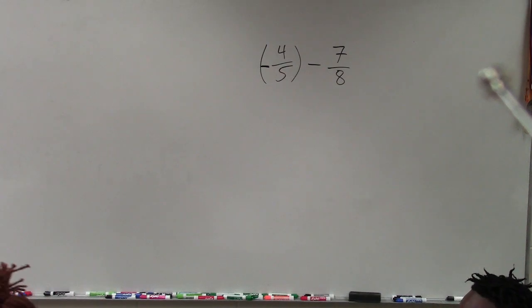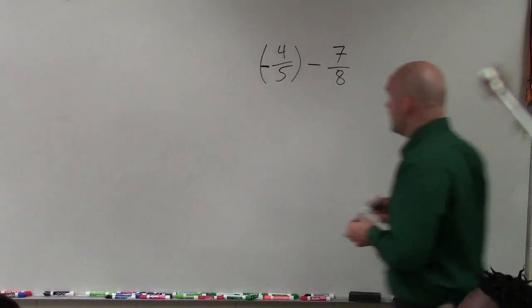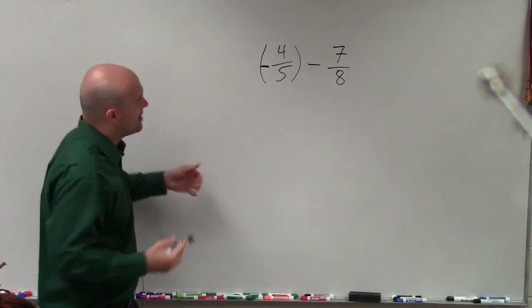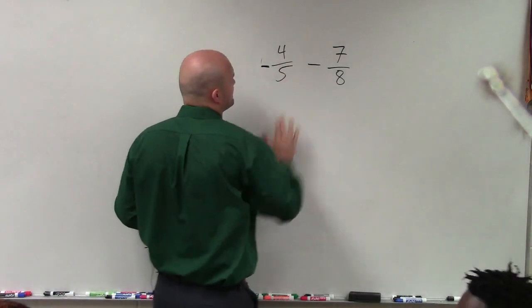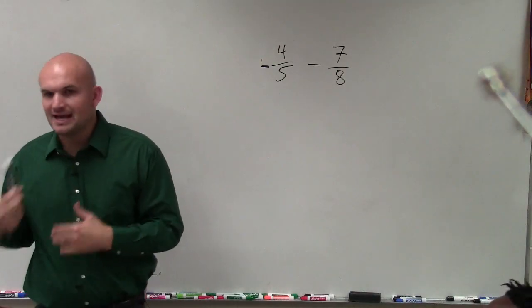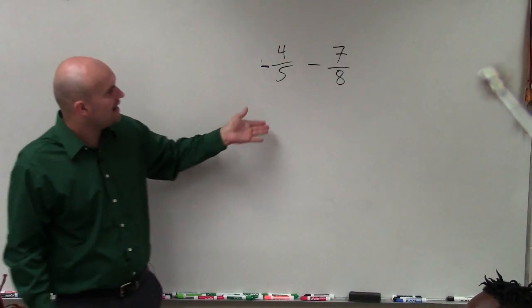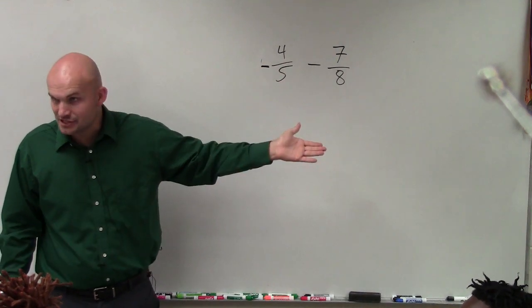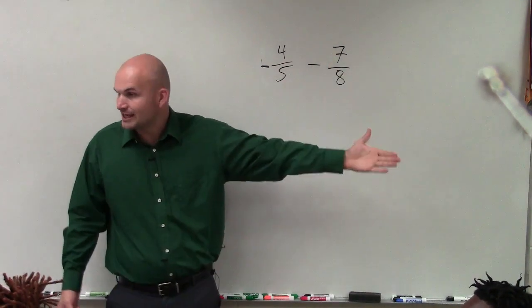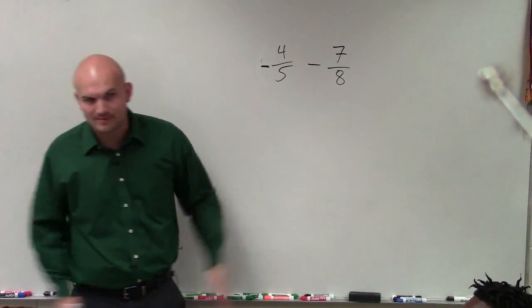Perfect. So I have negative 4 fifths minus 7 eighths. So when doing a problem like this, I don't really need these parentheses here. But the first thing that I need to be able to do, I can rewrite this as an addition problem. You could say also add a negative, which would be the exact same thing.